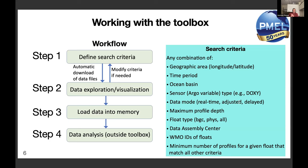The workflow has four steps: first, define your search criteria. There are 10 different criteria available — any combination of geographic area, time period, ocean basin, sensor or variable, data mode, maximum profile depth, float type, data assembly center, float IDs, and minimum number of matching profiles per float. You can use none, any, or all of them. When the toolbox finds matching floats, it automatically downloads the S-prof and profile files so you can start exploring data.